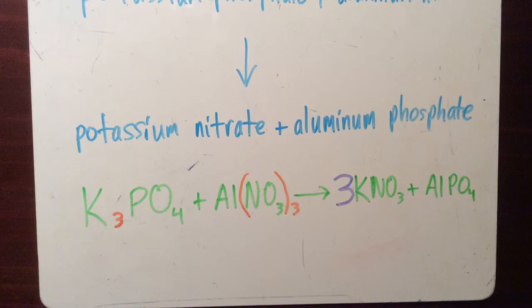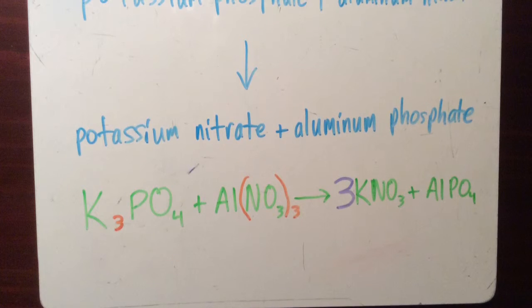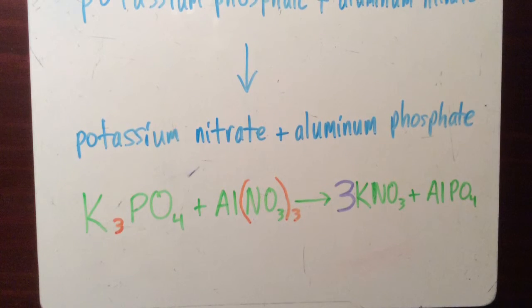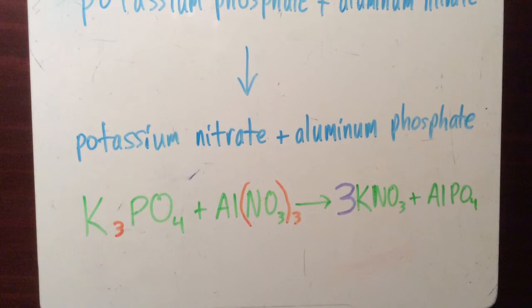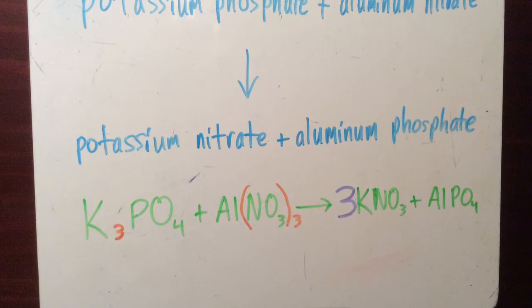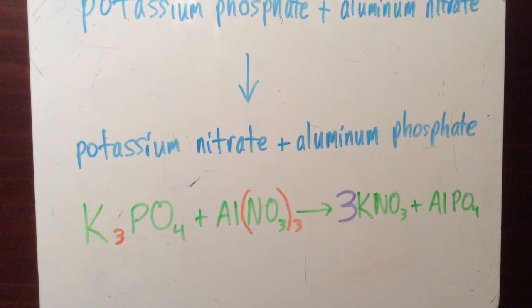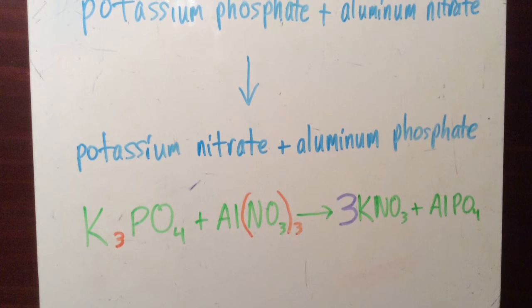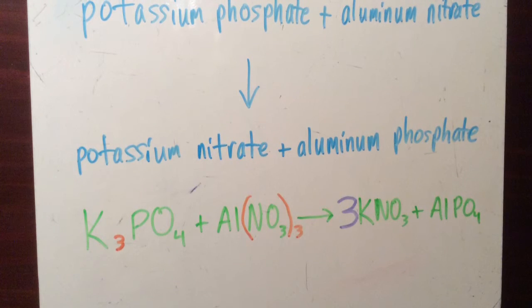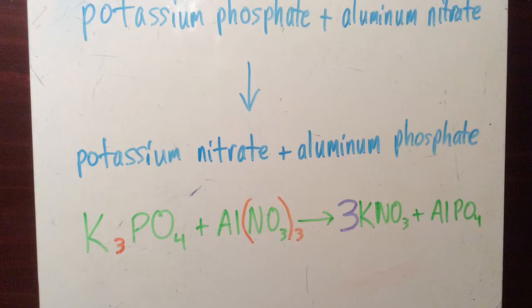To make it so that there are 3 potassiums on each side, we'll need to add a coefficient of 3 in front of the molecule potassium nitrate. This coefficient applies to the entire molecule. So, potassium now has 3 on the right side and so does nitrate.